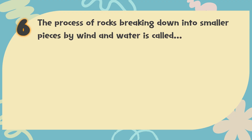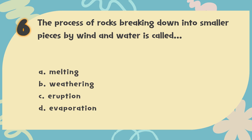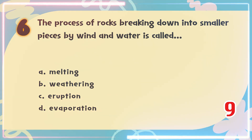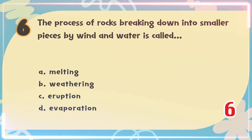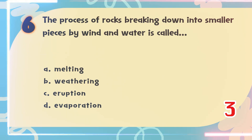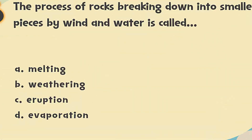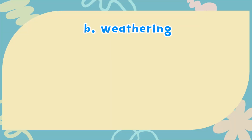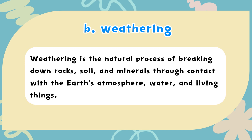Number 6: The process of rocks breaking down into smaller pieces by wind and water is called — A. Melting, B. Weathering, C. Eruption, D. Evaporation. The correct answer is B. Weathering. Weathering is the natural process of breaking down rocks, soil, and minerals through contact with the earth's atmosphere, water, and living things.